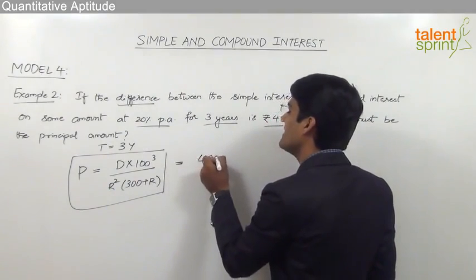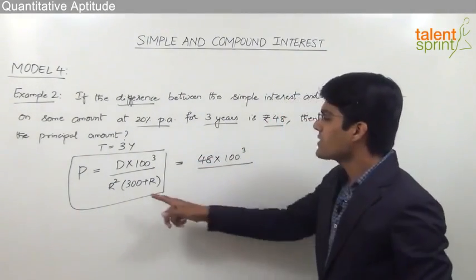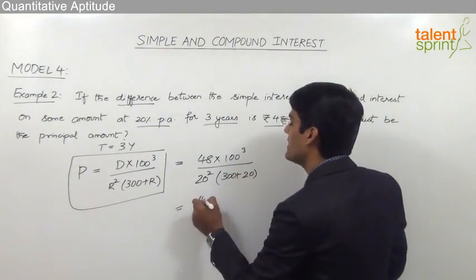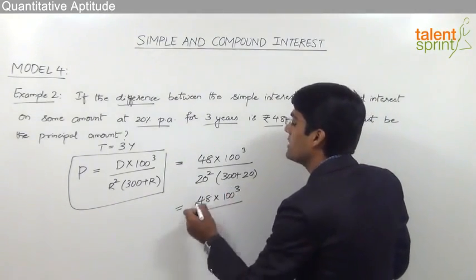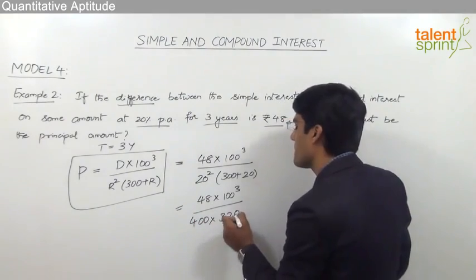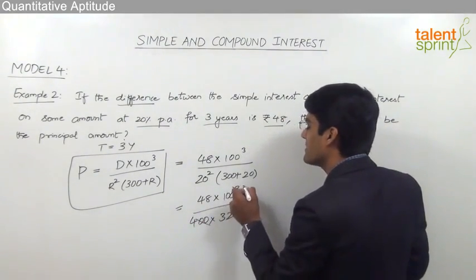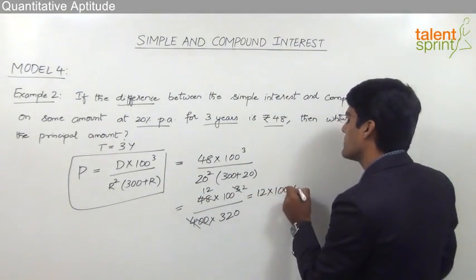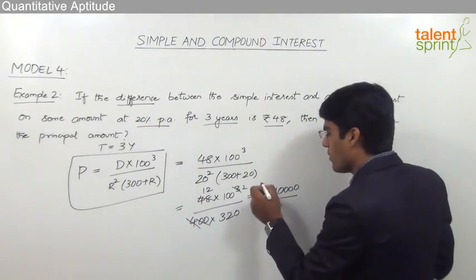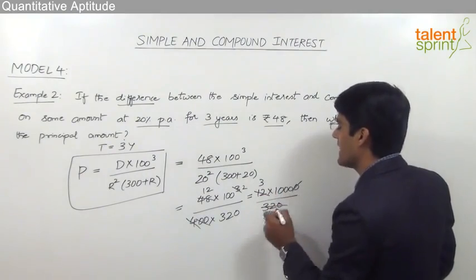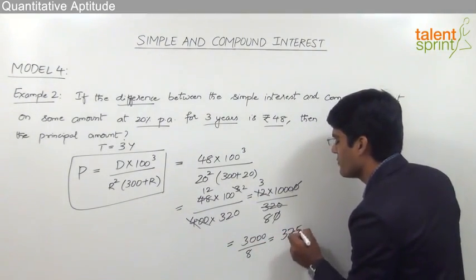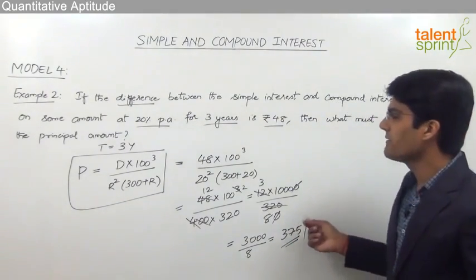Substituting values: P equals 48 into 100 cubed divided by R squared, where R is 20, so 20 squared is 400, into 300 plus 20 equals 320. This gives 48 into 100 cubed divided by 400 into 320. Simplifying: zeros cancel, 4 goes 12 times, giving 12 into 10,000 divided by 320. Further simplification: 3 into 1000 divided by 8, which equals Rs. 375. So the principal amount is Rs. 375 for a difference of Rs. 48 at 20% per annum for 3 years.